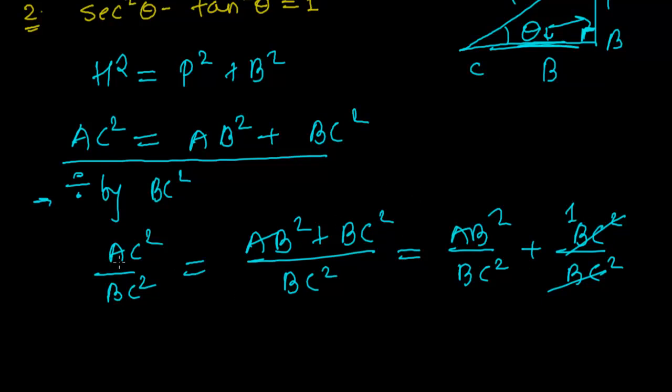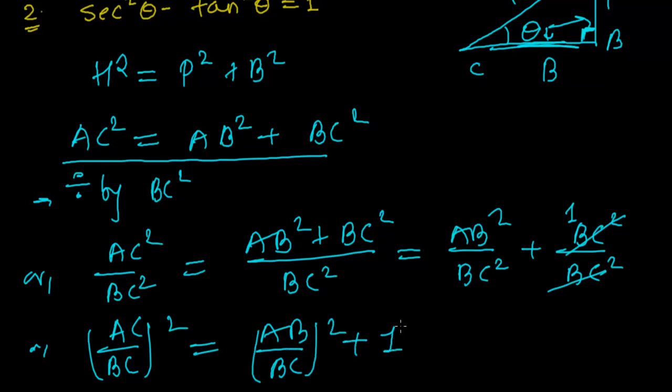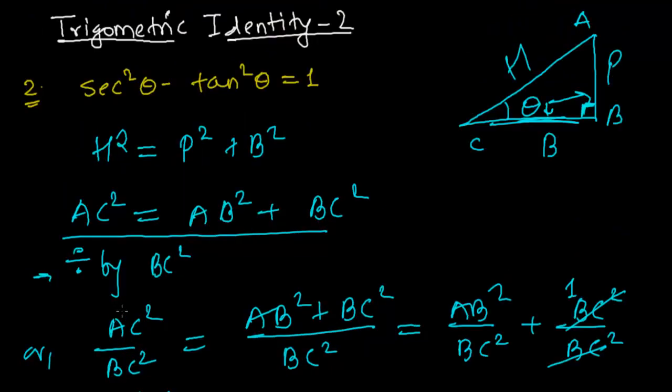So now, I can write AC² upon BC² equals AB² upon BC² plus 1. So AC upon BC, let's see here.